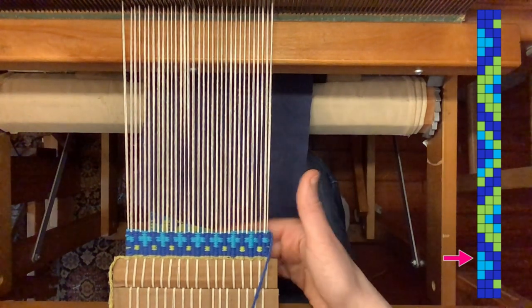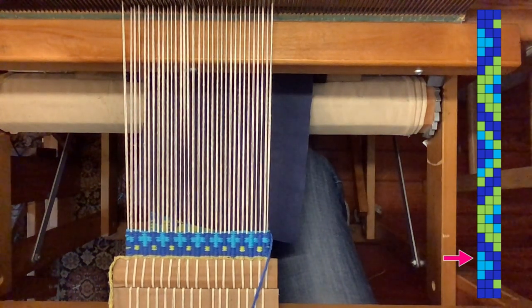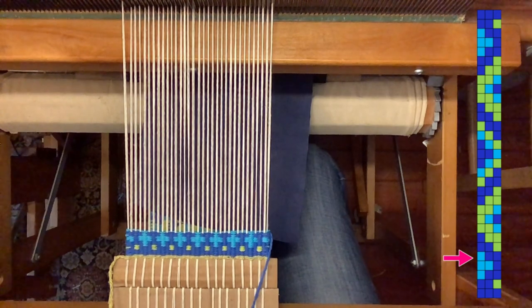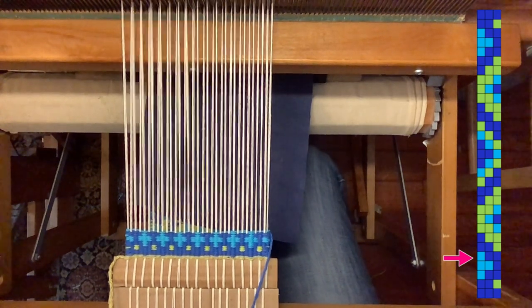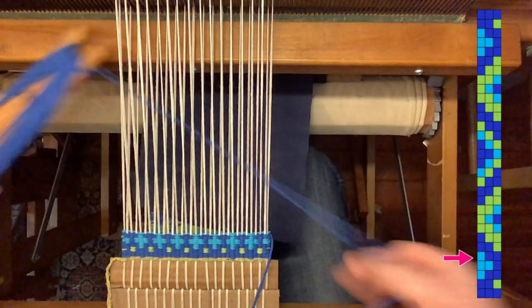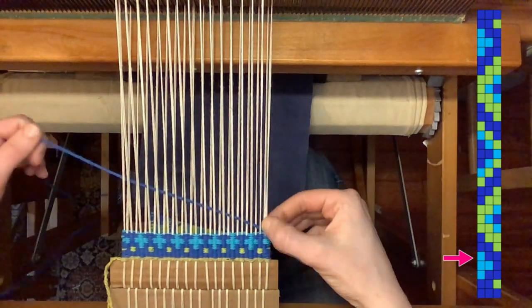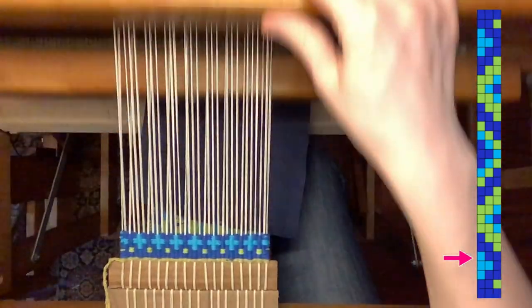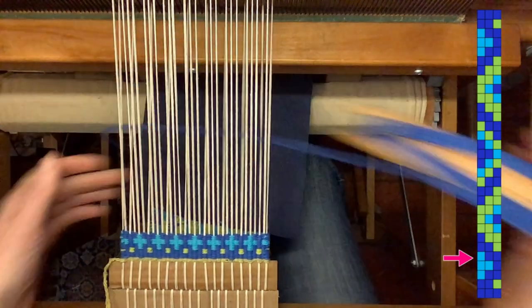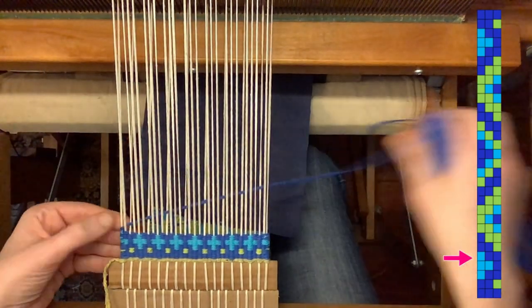Okay, and now that I've tucked the end of my light blue in, I need to remember to repeat those two more picks that I unwove. So then dark blue goes in shed two, and dark blue goes in shed three.